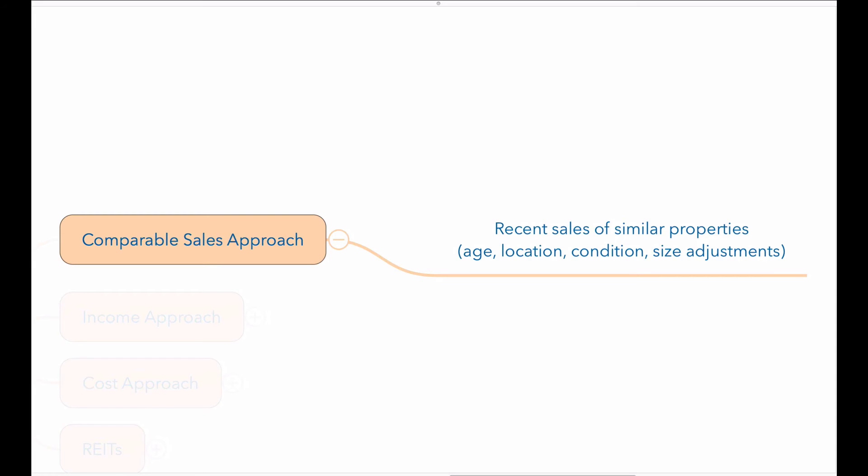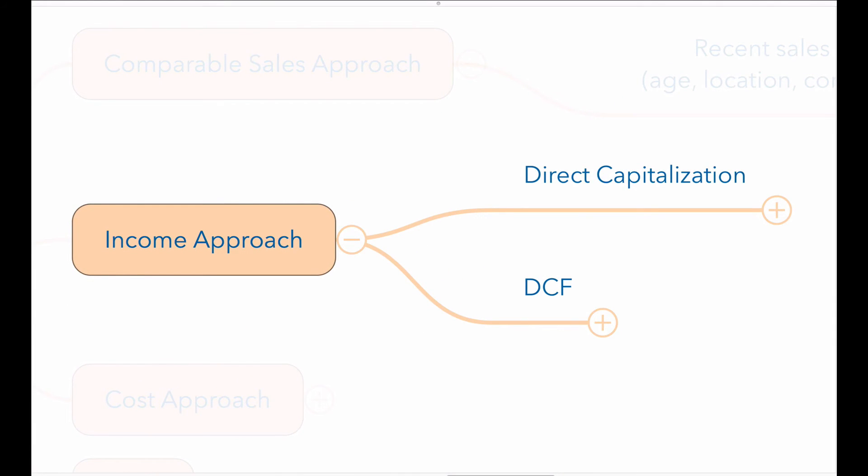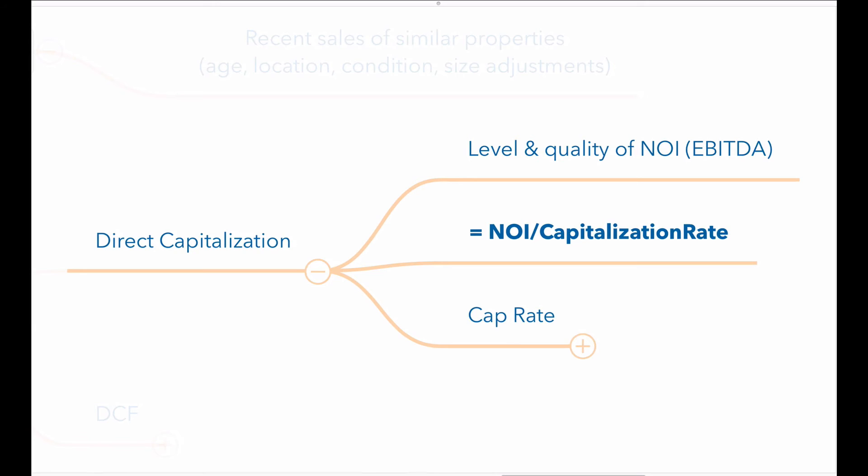The income approach uses either direct capitalization or discounted cash flow to appraise an income-producing property. Direct capitalization estimates the value of an income-producing property based on the level and quality of its net operating income or NOI. NOI is similar to EBITDA, earnings before interest, tax, depreciation, and amortization. NOI is a proxy for property-level operating cash flow.